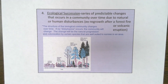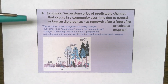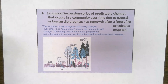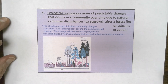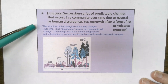Our last topic on this PowerPoint is ecological succession — a series of predictable changes that occur in a community over time due to either natural or human disturbances. Examples include regrowth of a forest after a fire or what happens in an area after a volcanic eruption. The structure of the biological community changes over time; if no disturbance occurs, the community will still change through natural progression and colonization by species well-suited to survive in an area.